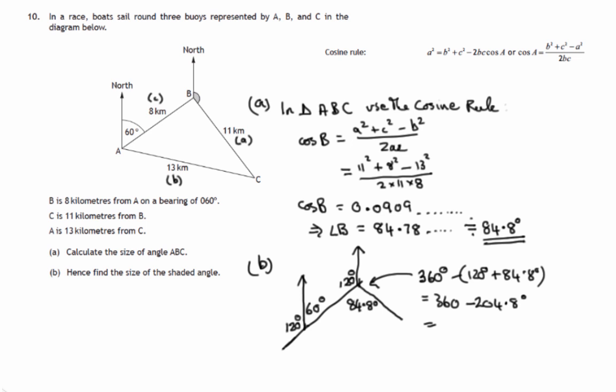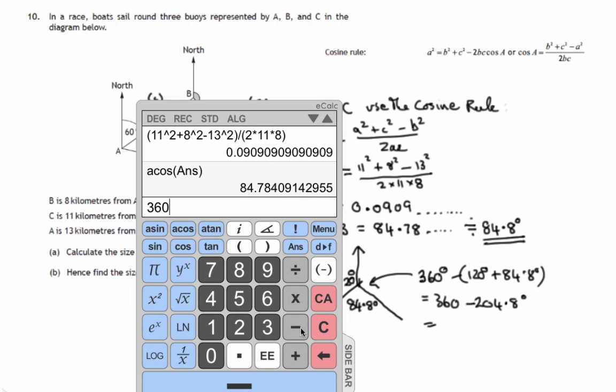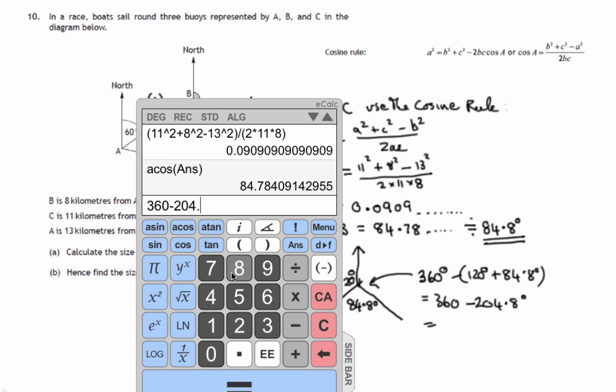And if we work that out, use the calculator just to make sure I'm making no mistakes. And that comes to 155.2 degrees. And that's to one decimal place.